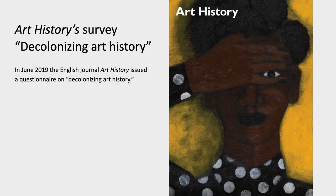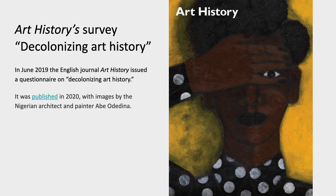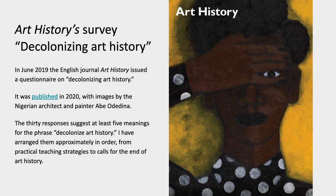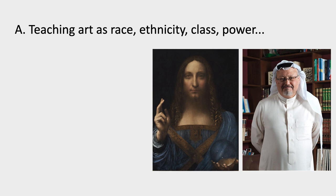In 2019, the English journal Art History issued a questionnaire on decolonizing art history. It was published the next year with its images — that's the cover of that issue — by the Nigerian architect and painter Abe Ododina. There are about 30 responses, and to me they suggest about five different strategies to understand the phrase 'decolonize art history.' I've arranged these in approximate order from practical teaching strategies that are common in the discipline to calls that would effectively end a discipline that could be called art history.